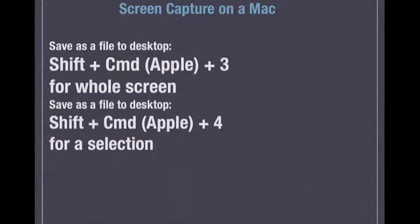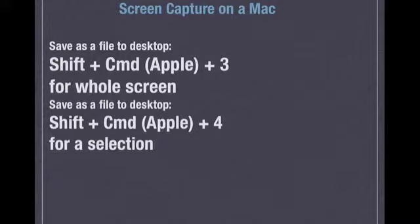So to take a screen capture on a Mac, you just have to hit a few quick keys. You hit Shift plus Command (or the Apple key) plus 3, and that is going to capture the whole screen and save it as a JPEG file to your desktop. Or you can hit Shift plus Command plus 4, and it's going to give you a selection rectangle where you can draw over the specific area that you want to capture, and it'll save just that one area as a JPEG to your desktop. Then you can open up that file in a program like Photoshop to draw on top of it, attach it to an email, or whatever you want to do.